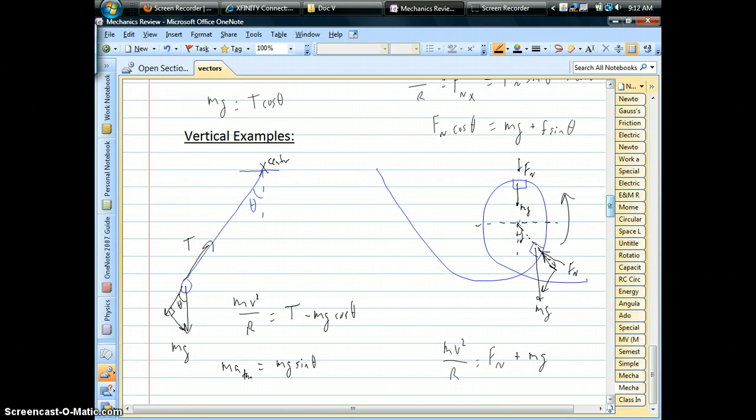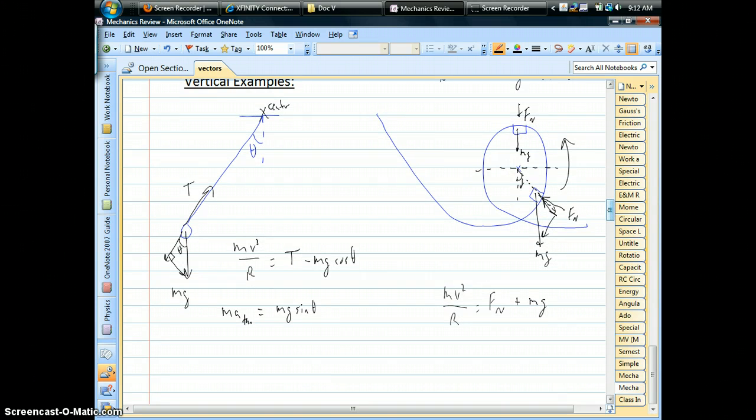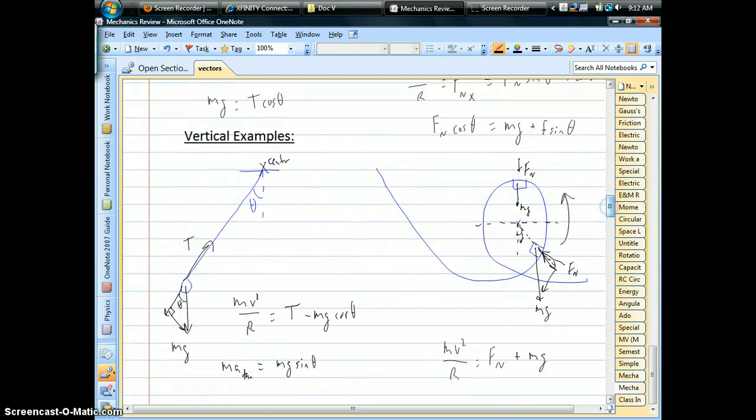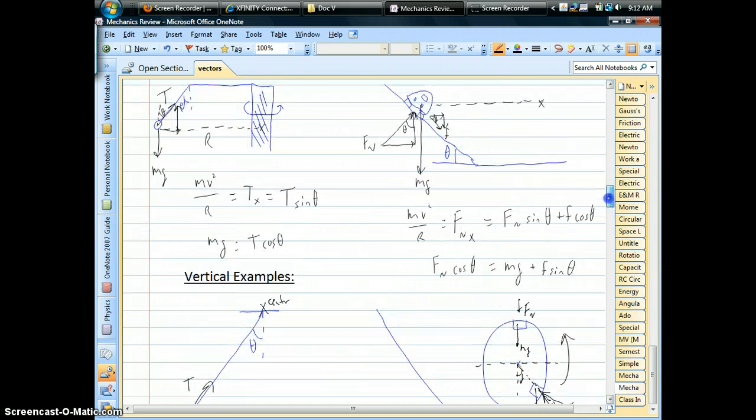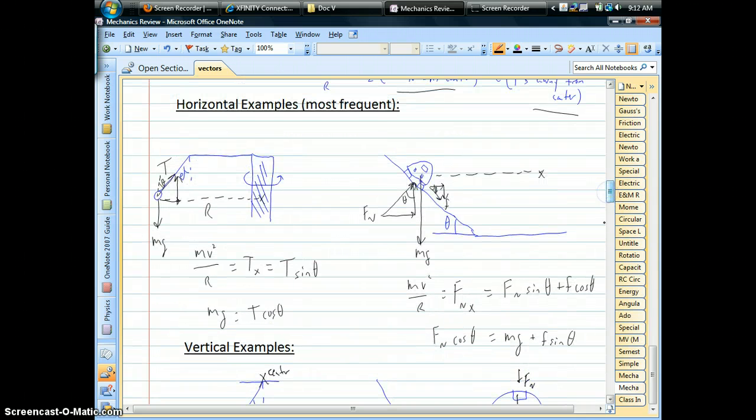So these are just a couple examples for each case, vertical and horizontal. Hopefully it helps. Hopefully you kind of see the difference and get the hang of how to set up mv squared over r. Let the picture help you. Mark it up, draw your vectors in, see what points towards the center. Life will be a lot easier for you, I guarantee it. And yeah, I hope it helps, and until next time, we'll see you later.